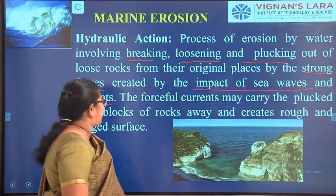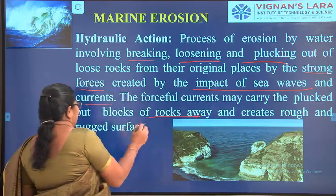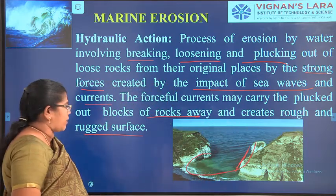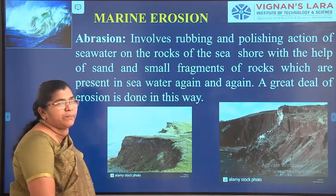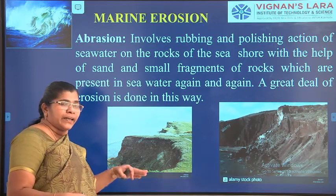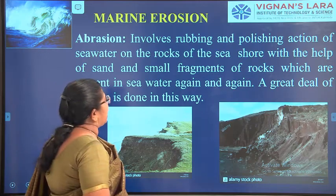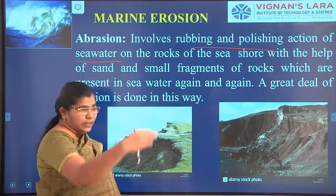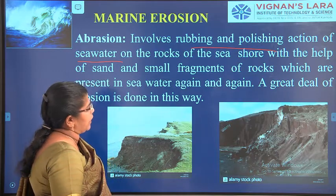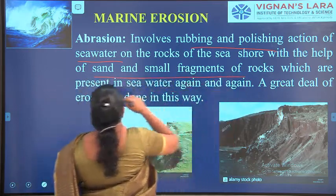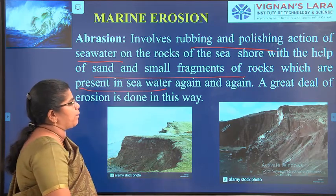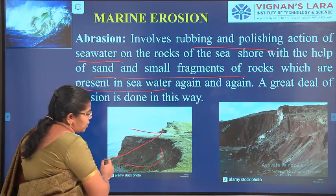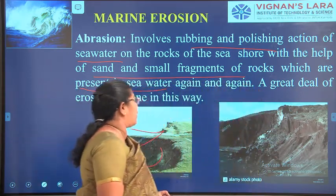The forceful current may carry the plucked-out blocks or rocks away, creating a rough and rugged surface. Abrasion is the rubbing and polishing action of sea water on the rocks, particularly at the seashore. The sand and small fragments of rocks present in the sea water are again and again taken and broken away — this is abrasion, where soft particles are carried away.